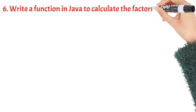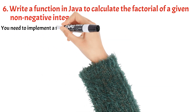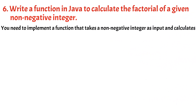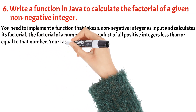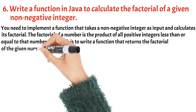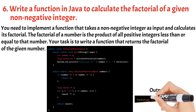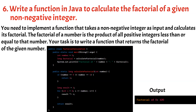Write a function in Java to calculate the factorial of a given non-negative integer. You need to implement a function that takes a non-negative integer as input and calculates its factorial. The factorial of a number is the product of all positive integers less than or equal to that number. Your task is to write a function that returns the factorial of the given number. In this example, the calculateFactorial method takes a non-negative integer as input. It first checks if the number is 0 or 1, in which case the factorial is defined as 1 and the method returns 1. For other positive numbers, it initializes a result variable to 1 and, using a for loop, iterates from 2 to the given number, multiplying the result by each number in the range. This process calculates the factorial of the number.